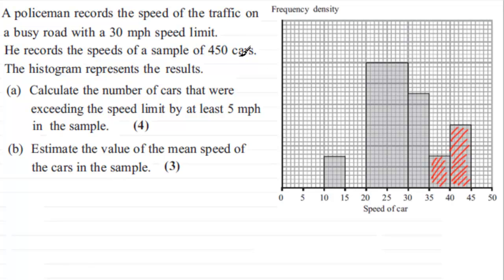I know that the total area should come to 450 and when I look at these blocks I can see that they're mainly made up of squares like this. So I'm going to take one of those squares and figure out how many cars an area of that size represents.